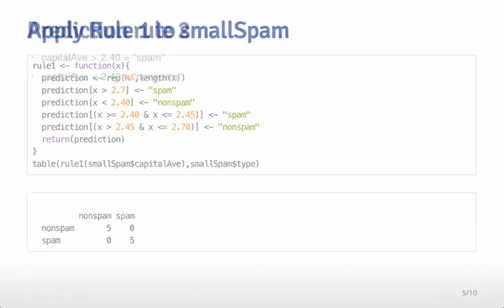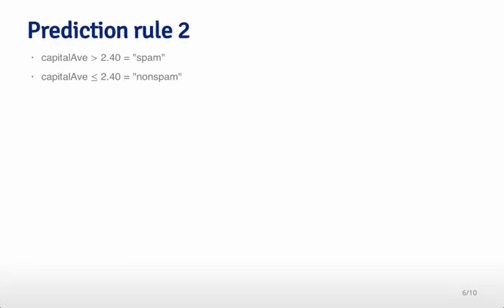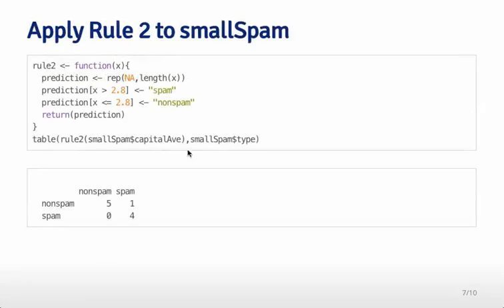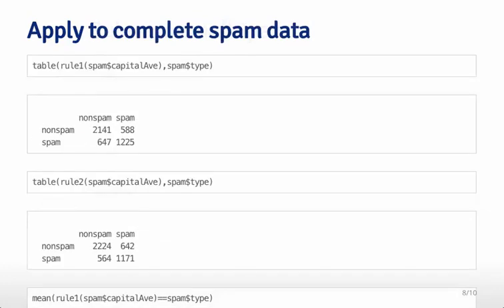An alternative rule would not train quite so tightly to the training set, but would still use the basic principle of if you have a high number of capital letters, then you're a spam message. This rule might look like if you're above 2.40, you're a spam message. If you're less than or equal to 2.40, then you're a non-spam message. This rule on the training set would then miss that one value. Overall, this looks like in the training set that the accuracy is a little bit lower for this rule and it's a little bit more simplistic.